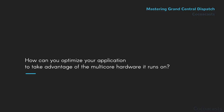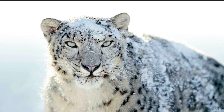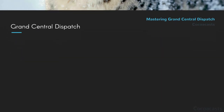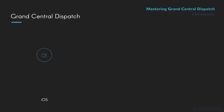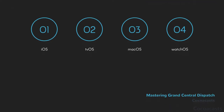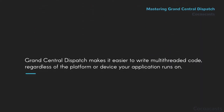Apple introduced Grand Central Dispatch almost 10 years ago. It first made its appearance in macOS 10 Snow Leopard. Today it's available on iOS, tvOS, macOS, and watchOS. Grand Central Dispatch makes it easier to write multi-threaded code, regardless of the platform or device your application runs on.